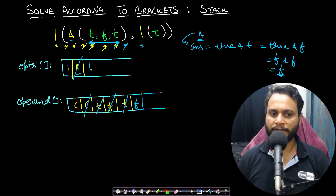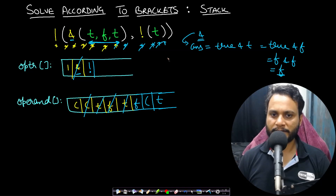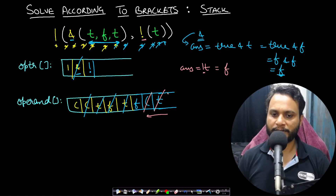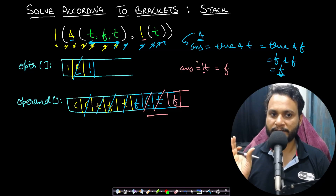Moving forward, the comma is skipped and we see a NOT operator, which is pushed into the operator stack. Then we see an opening bracket pushed into the operand stack, then true is pushed as well. When we see a closing bracket, we take out the expression until an opening bracket. For logical NOT, there is exactly one entity — we take the top of the stack (true), pop the opening bracket, perform logical NOT to get false, and push false back into the operand stack.